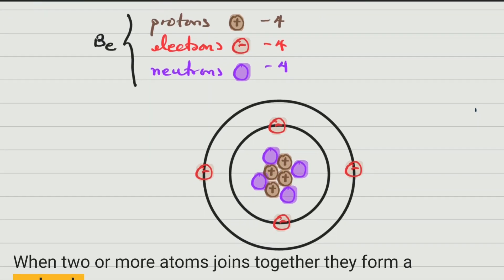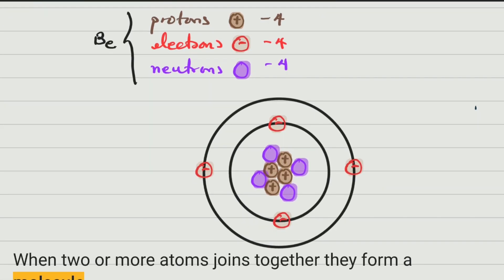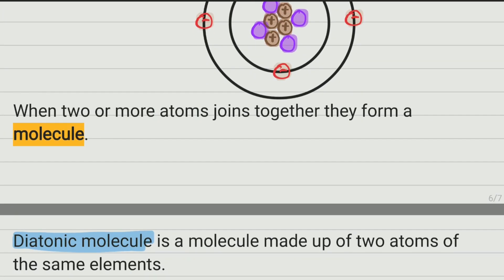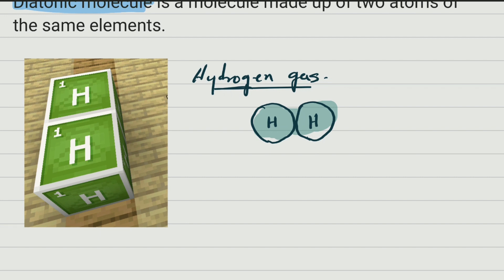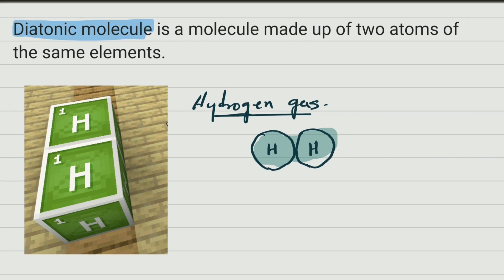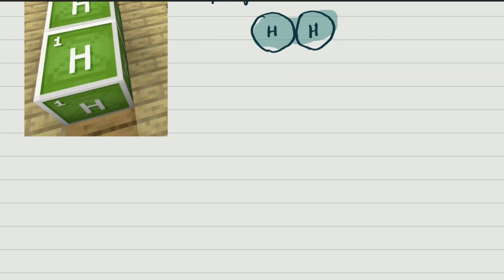I hope you understand: you use this model to make an atom, and when one atom combines with another atom, you make a molecule. If the two atoms that combine are the same, that is called a diatomic molecule. This is a very important definition — it is going to be in the test, and the test is coming up soon.